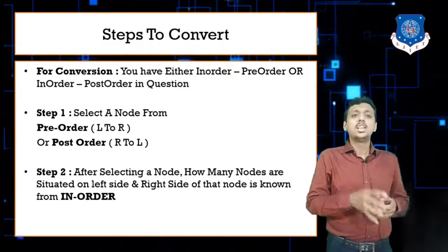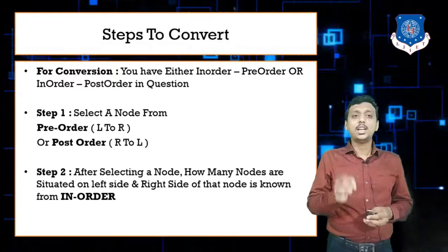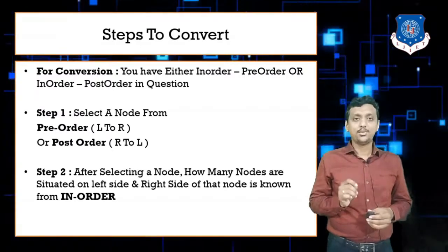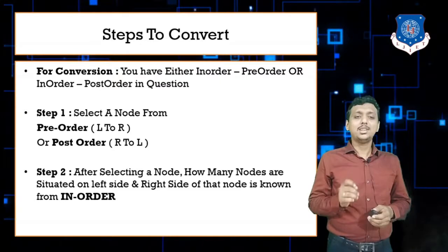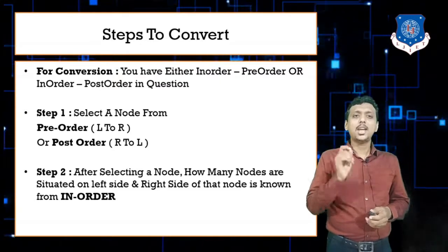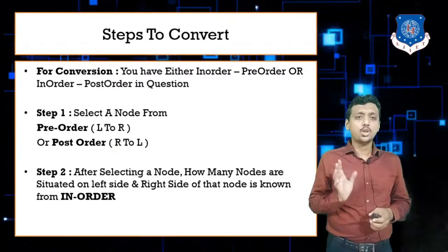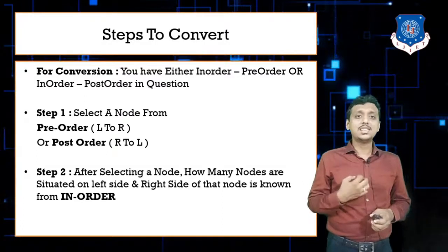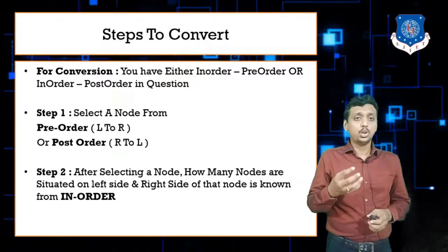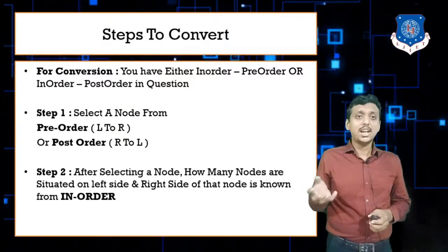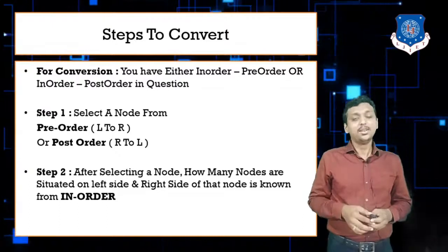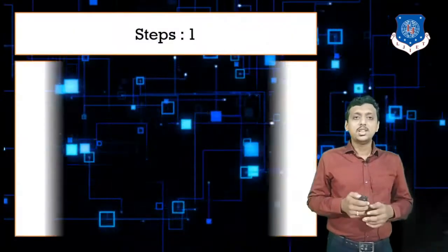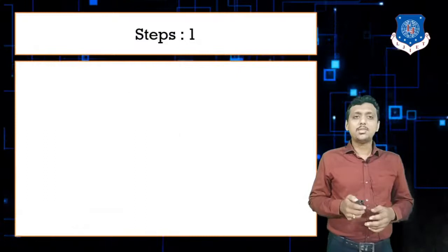Step number two: after selecting the root node, you determine how many nodes are on the left side and how many are on the right side — and that is always calculated from the in-order sequence. So pre-order and post-order are used for node selection, and in-order is used to decide left and right placement.